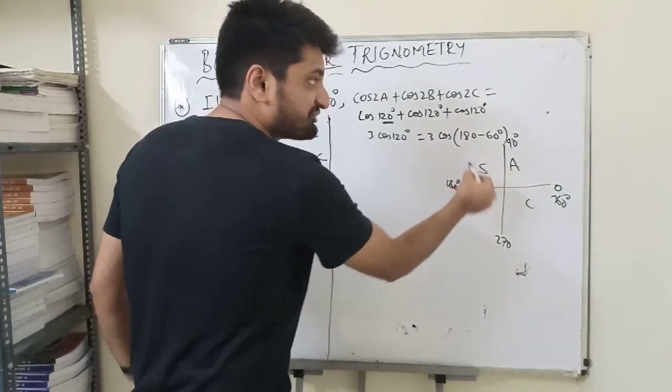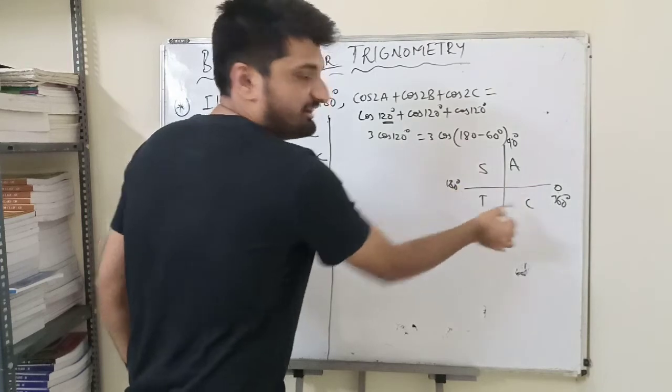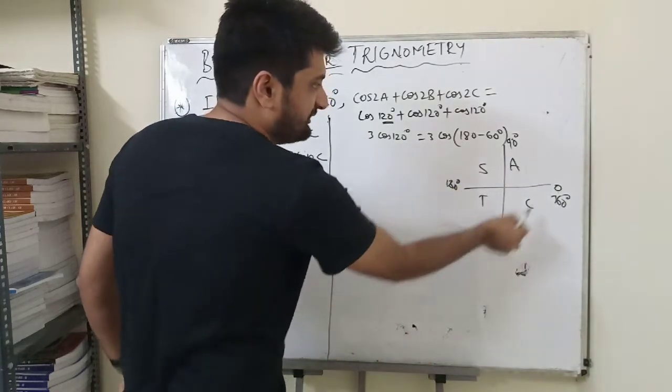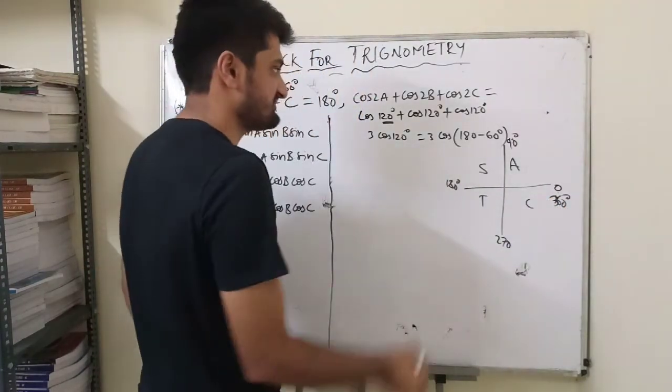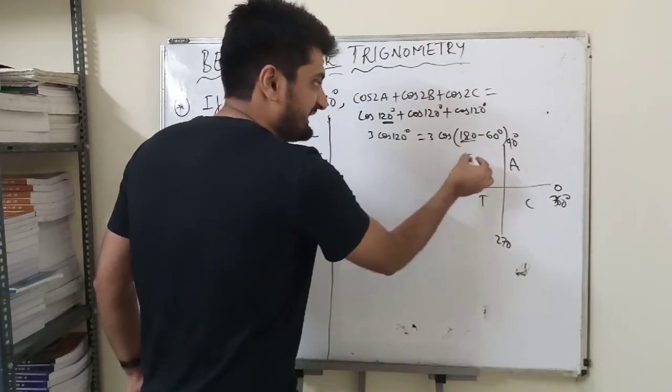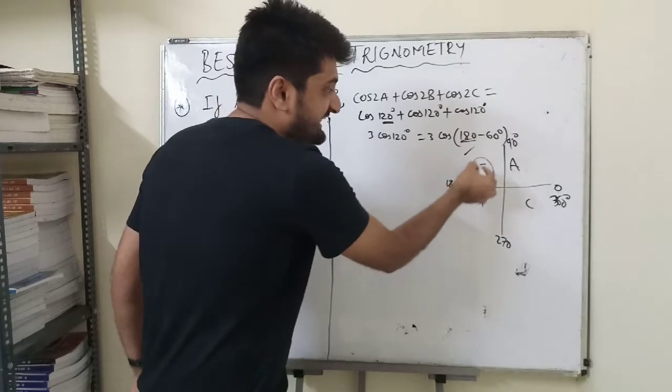Detect from the quadrant table if it lies or not. So we use the concept of All Silver TeaCups. We know 0, 90, 180, 270, and 360 degrees. 180 minus will lie in the second quadrant where only sin and cosecant are positive.